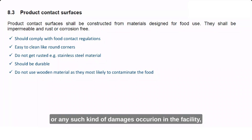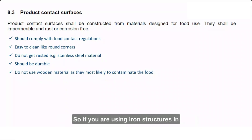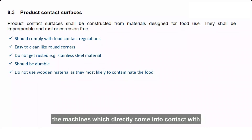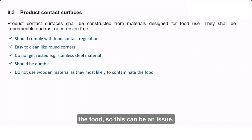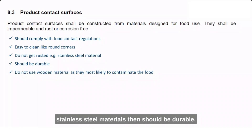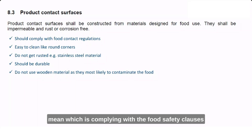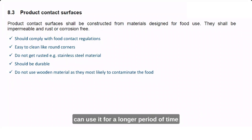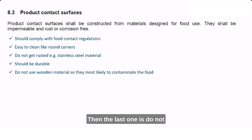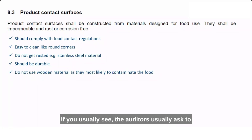Recommended surfaces for food contact areas are stainless steel materials. They must also be durable — meaning they comply with food safety requirements and can be used for a long period without causing damage. Wooden materials are not allowed in food processing areas; auditors typically ask that wooden pallets be replaced with plastic ones, since wood shreds can mix into the product.